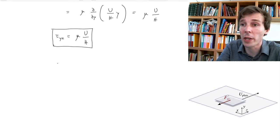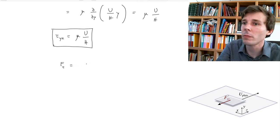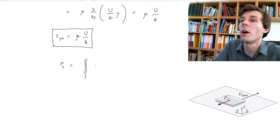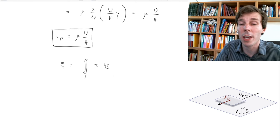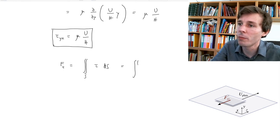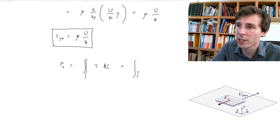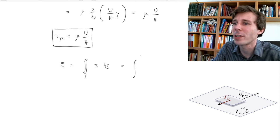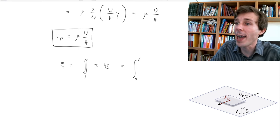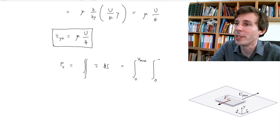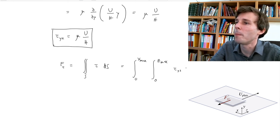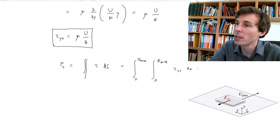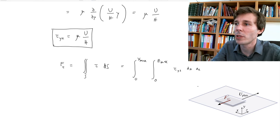Now that we've solved the fluid mechanics part, we go back to the engineering. The force due to shear on the plate is the integral over the whole surface of the shear multiplied by a small piece of area. We integrate over the two coordinates of interest: from zero to x_max in the X direction and from zero to z_max in the Z direction, of τ_yz dx dz.